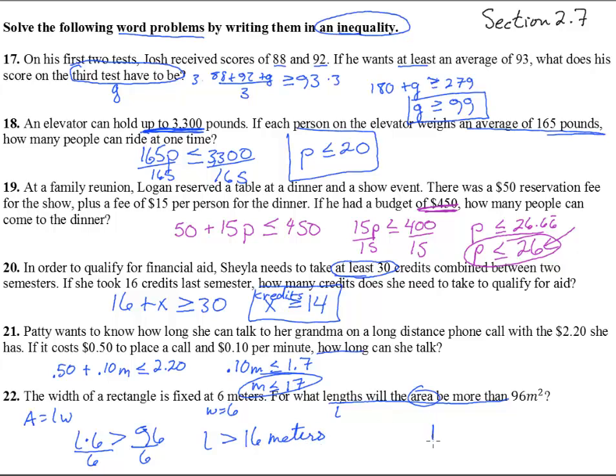So we have a fixed width here of 6 meters, and the length can go out like that, or it can go further, or further. And so we're saying from here out, in order to have an area greater than 96, you have to have more than 16 meters there. Good.